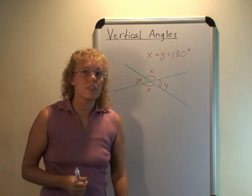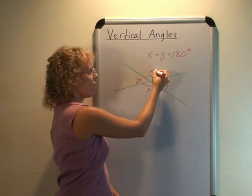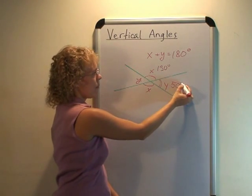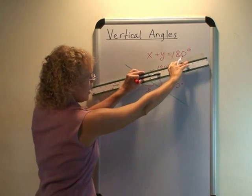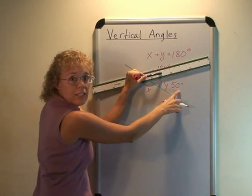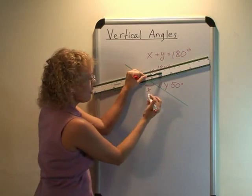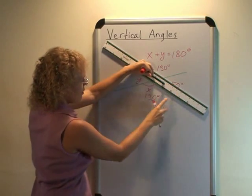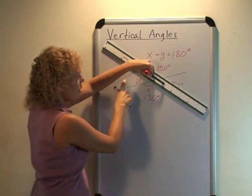You can also use specific numbers, it might be easier. For example, if x is 130, then this must be 50. Okay, and then after that, if you're looking here, if this is 50 degrees, then this must be 130, so that they add up to 180. And then from here to here, for example, 130, and then this must be 50.